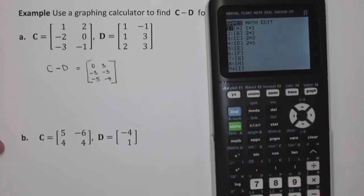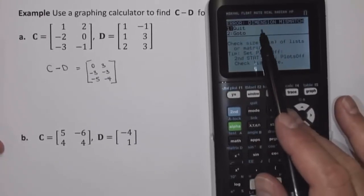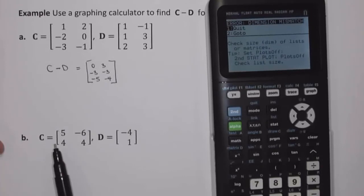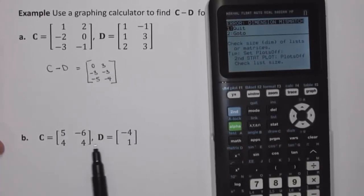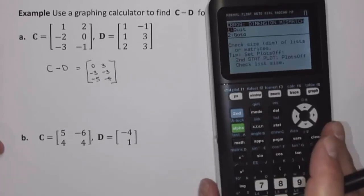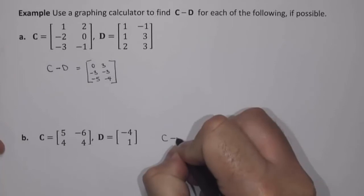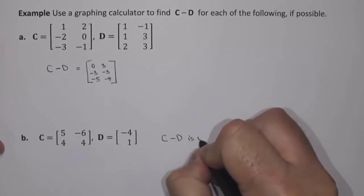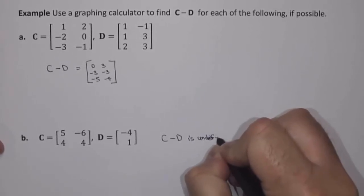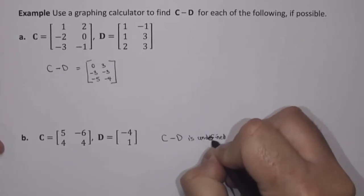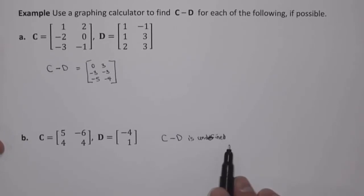Now if I do matrix C minus matrix D, in this case I get an error — a dimension mismatch error. We cannot find matrix C minus matrix D because they don't have the same order or the same dimensions. In order to subtract matrices, they have to have the same dimensions. Because these two matrices do not, we cannot subtract them. So the answer in this case is that matrix C minus matrix D is undefined.